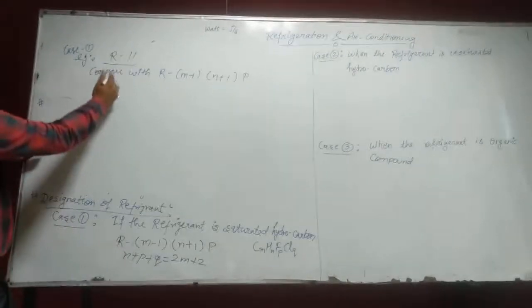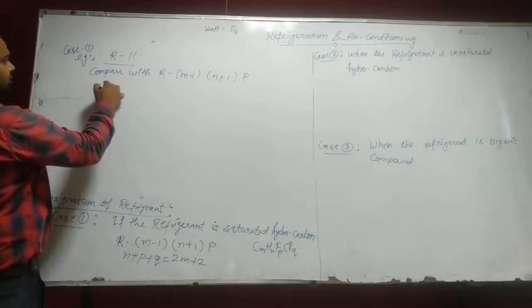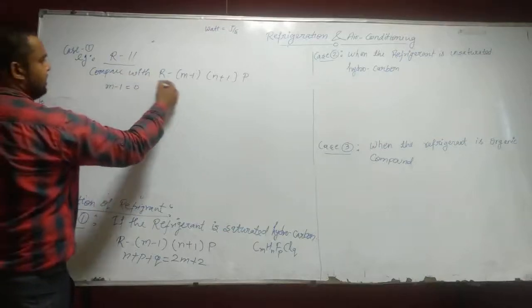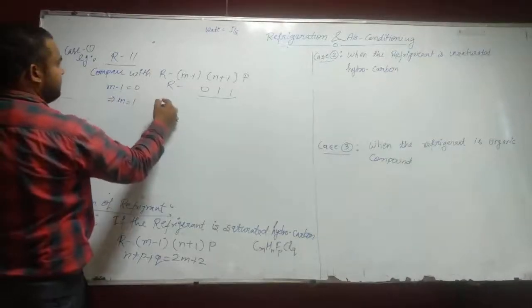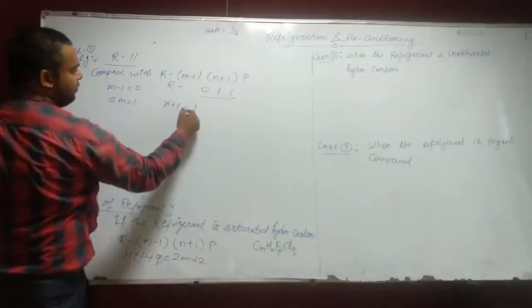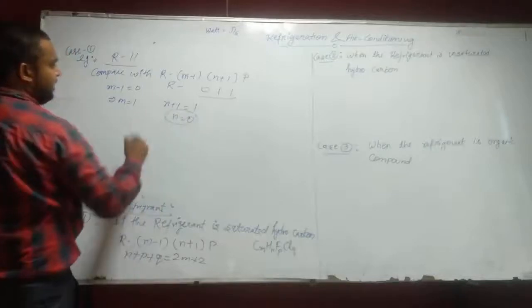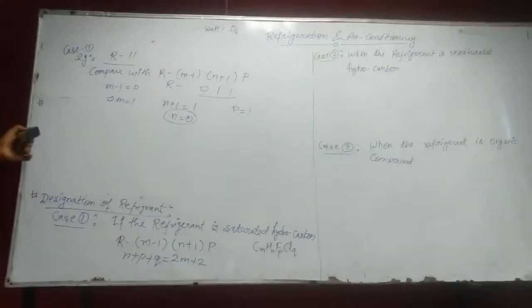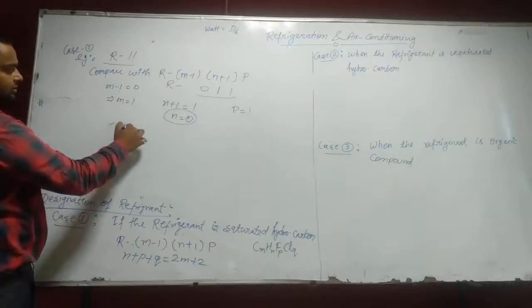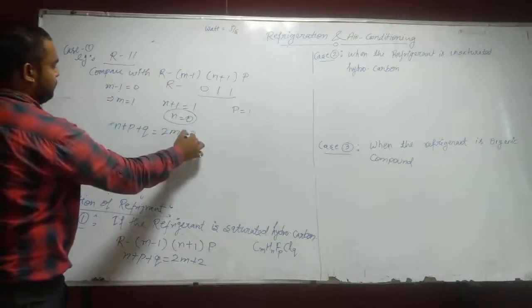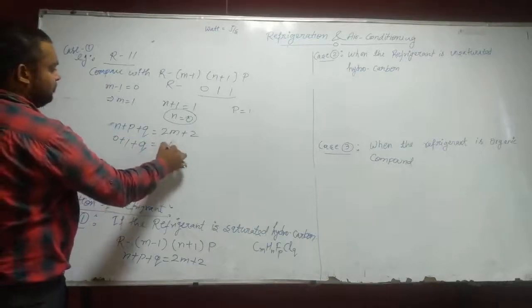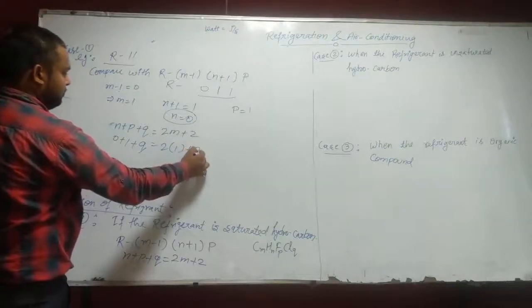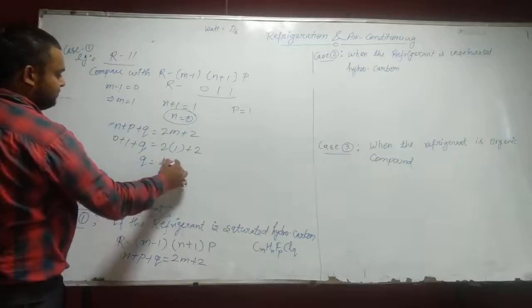By comparison, M-1 = 0, so M = 1. And N+1 = 1, so N = 0. And P = 1. To find out Q: N+P+Q = 2M+2. 0+1+Q = 2(1)+2. So Q = 4-1 = 3.